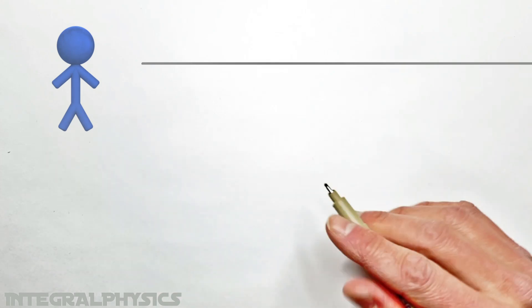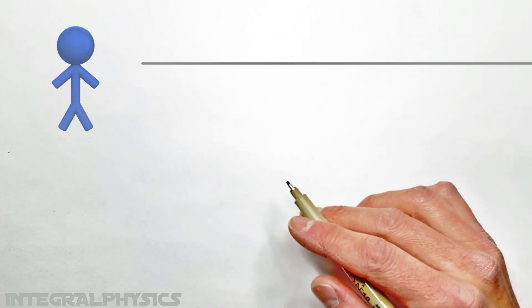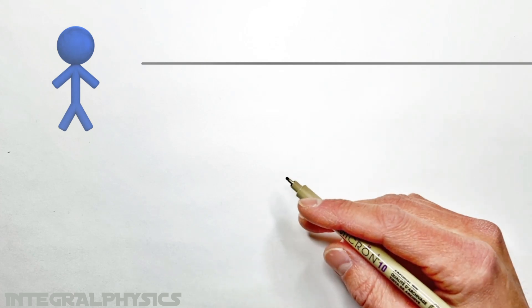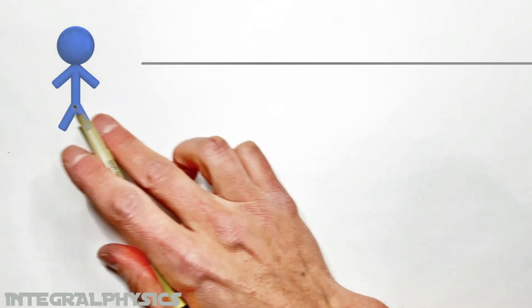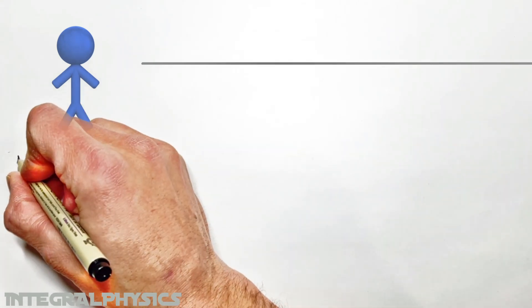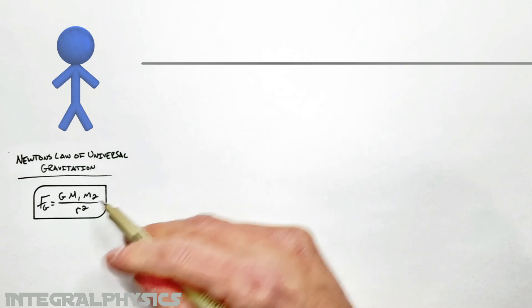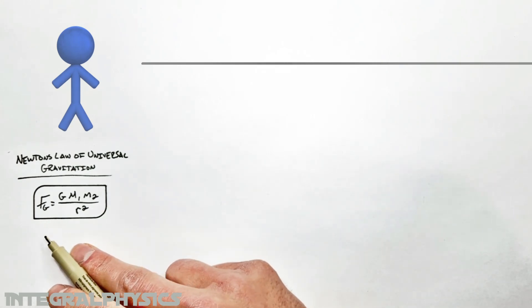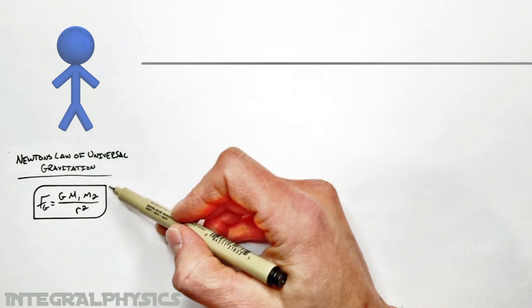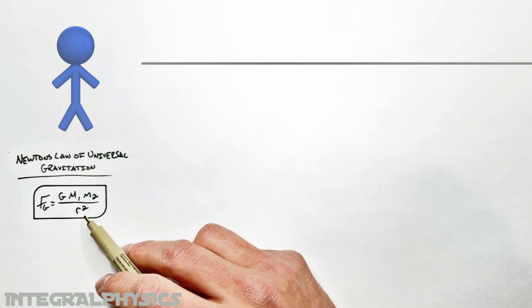Anytime we're talking about the gravitational force between two objects, we need to turn to Newton's law of universal gravitation, which tells us how much gravitational force exists between two masses as a function of how far apart those two masses have been set.